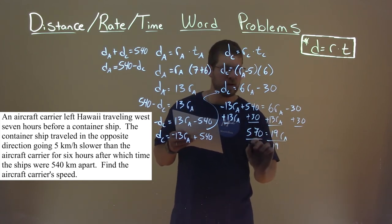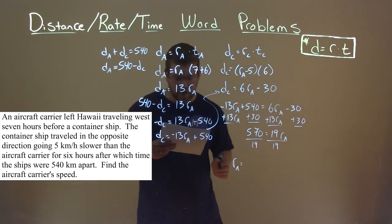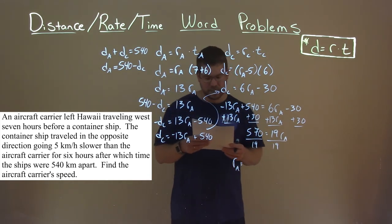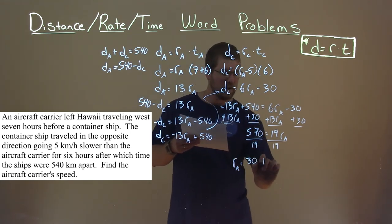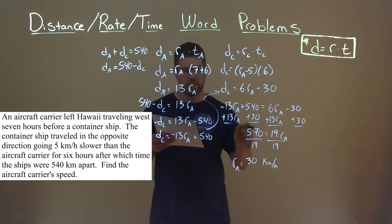We now divide by 19 on both sides. Let's put R sub A first. And 570 divided by 19 is 30, and our units is kilometers per hour. And so the aircraft carrier's speed is 30 kilometers per hour.